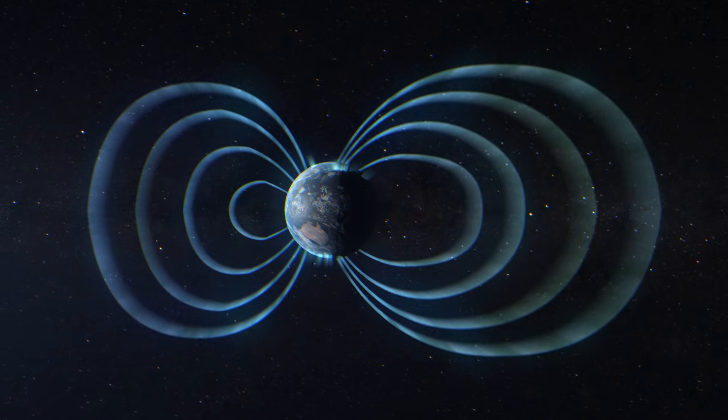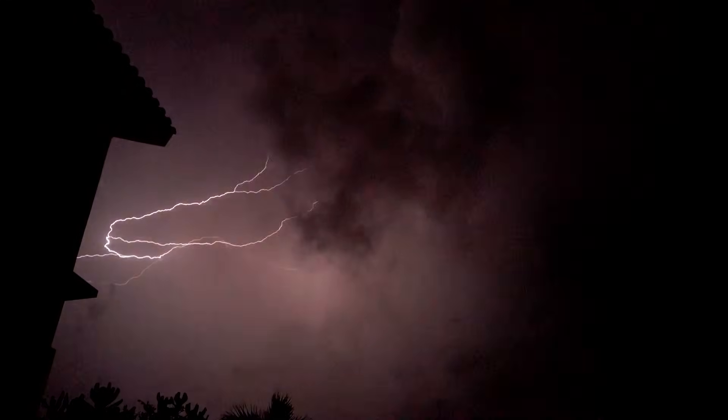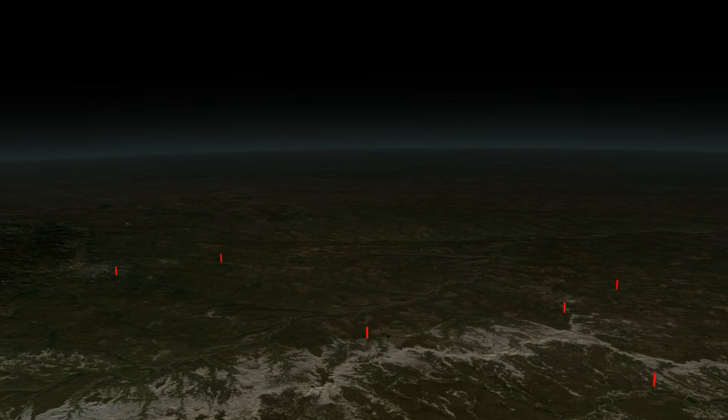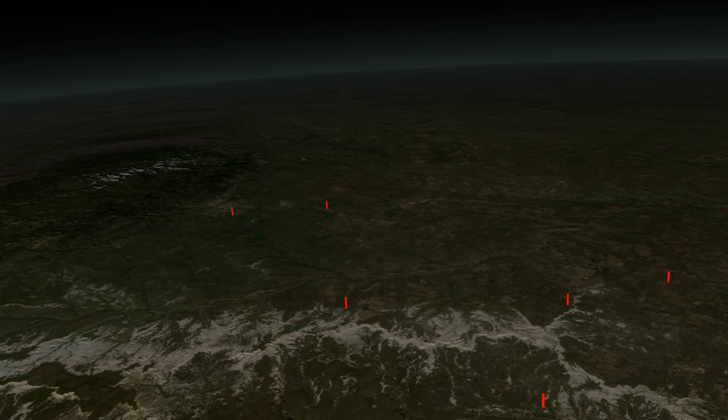When charged particles accumulate near the surface of the Earth, they can form storms. At times, during storms, massive amounts of charged electrons will discharge through the atmosphere and into the ground. Lightning is created when the differently charged regions of the atmosphere temporarily equalize.